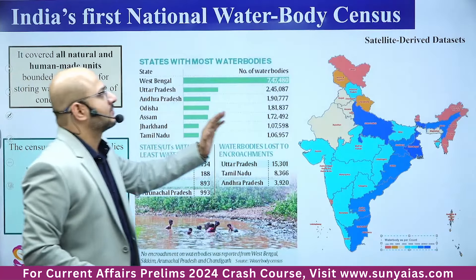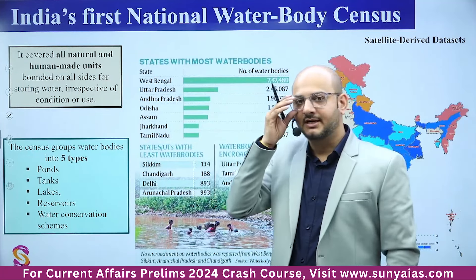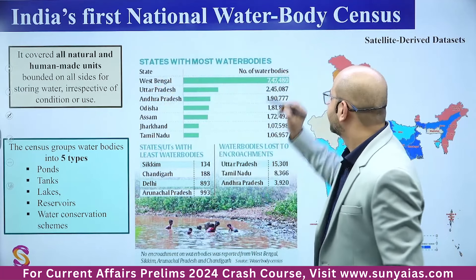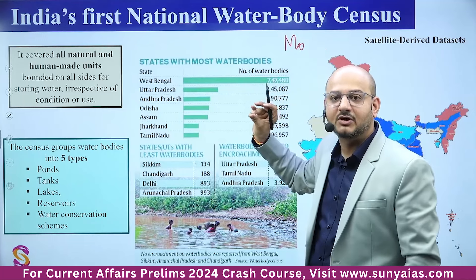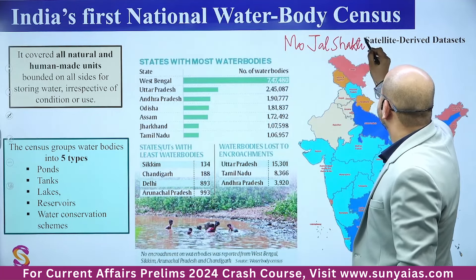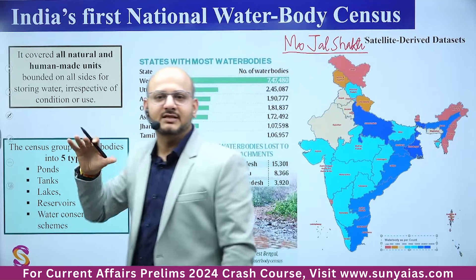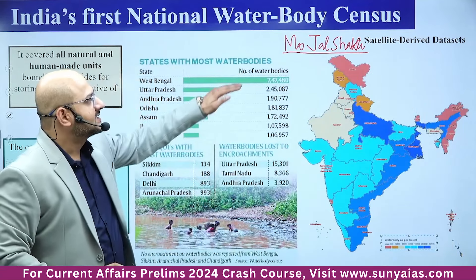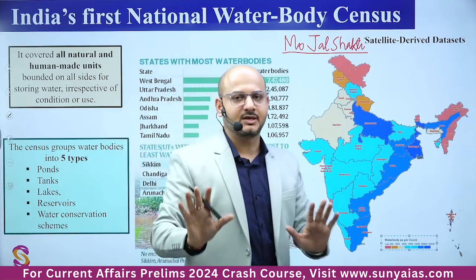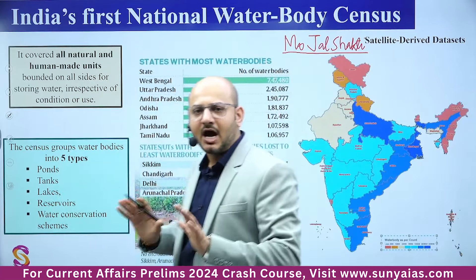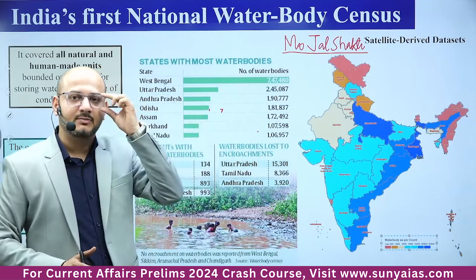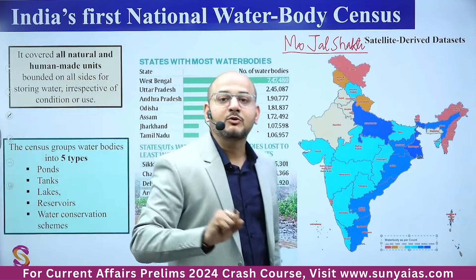India's first National Water Body Census has recently been conducted. Whenever we see such a census, look for which organization conducted it. It was conducted by the Ministry of Jal Shakti. Satellite-driven datasets and information available in the public domain were used for analysis, and a census was drawn. One important finding is that it has identified encroachment into water bodies.